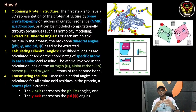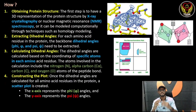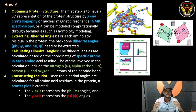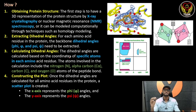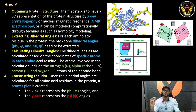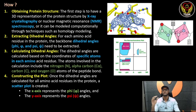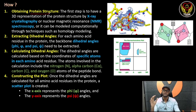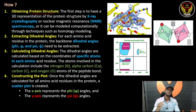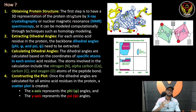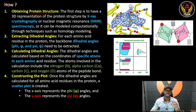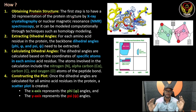First, when we look at Ramachandran's plot, we can see what we have done with it. This is Ramachandran's plot. This is the first part of the protein structure. We have to analyze this structure.